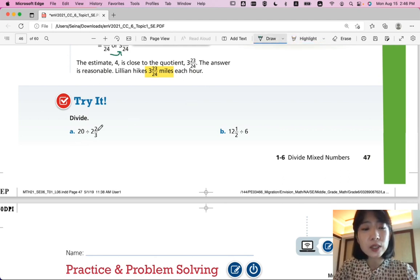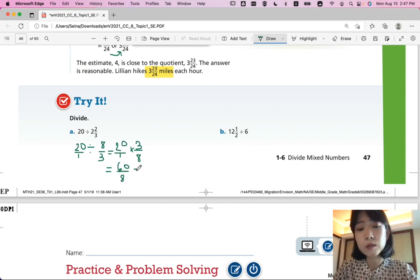Okay, are you ready? So, let's divide. What did you get for A and B? 20 divided by 2 and 2 third could be written as 20 over 1 divided by 2 times 3 is 6 plus 2 is 8 so 8 over 3 and you can change that into multiplication by using the reciprocal of 8 over 3 which is 3 over 8 and multiply them which is 60 over 8 and simplify them which is 7 and 1 half.